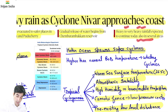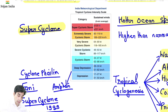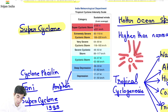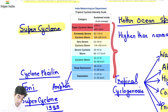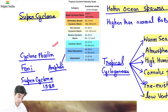Cyclones ko hum naam toh karte hi hain, saath hi saath inko category mein bhi rakhte hain. IMD ki category hai tropical cyclone ki intensity ke scale ke according: Super Cyclone, Extremely Severe, Very Severe, Cyclonic, Deep Depression, Depression. Wind speed determine karti hai ki woh kis category ka cyclone hai.